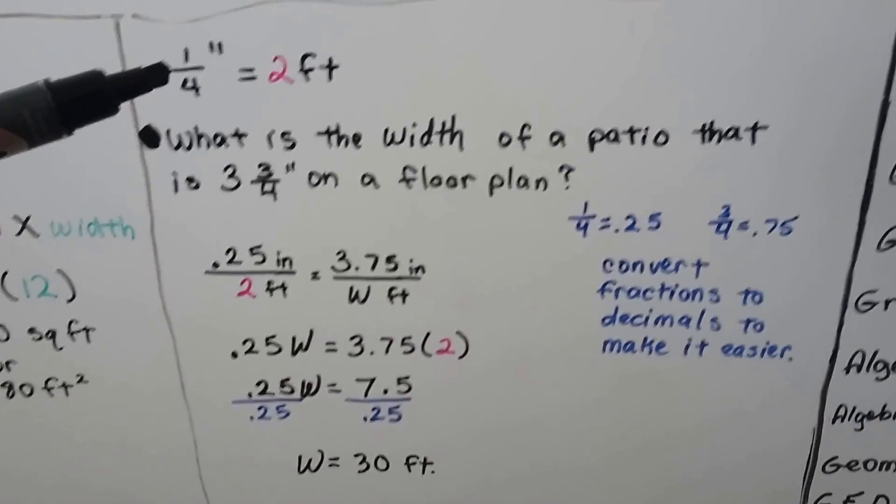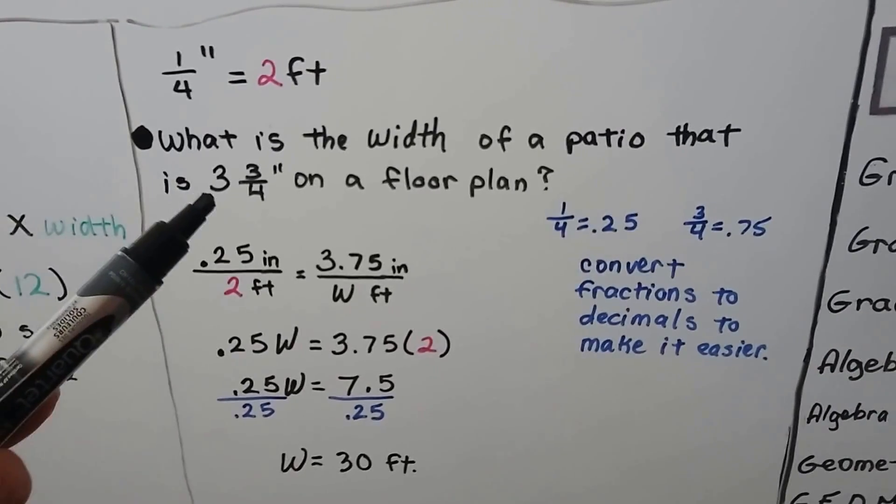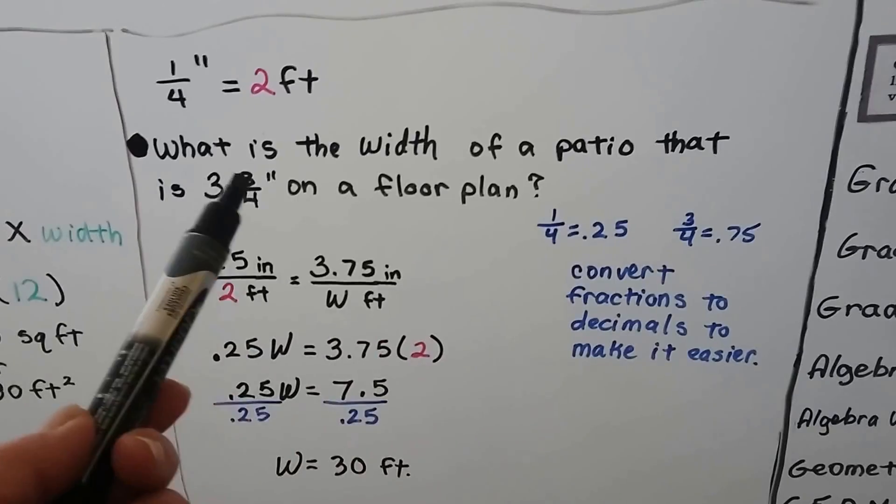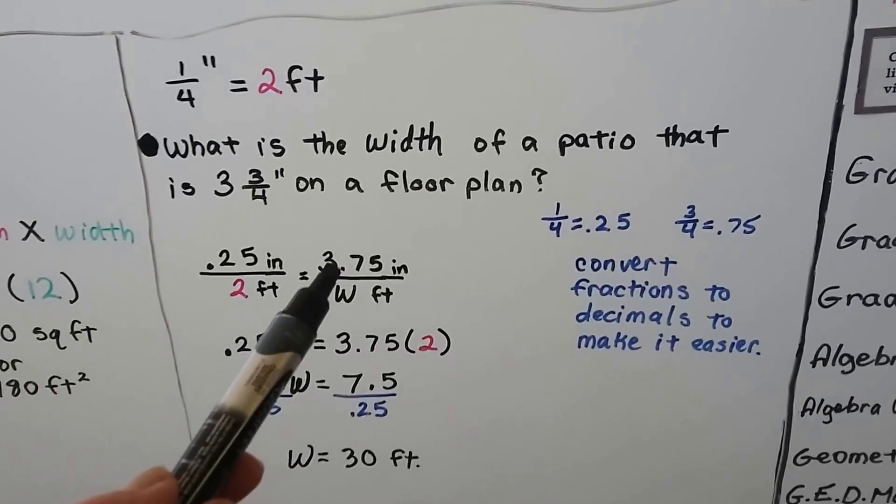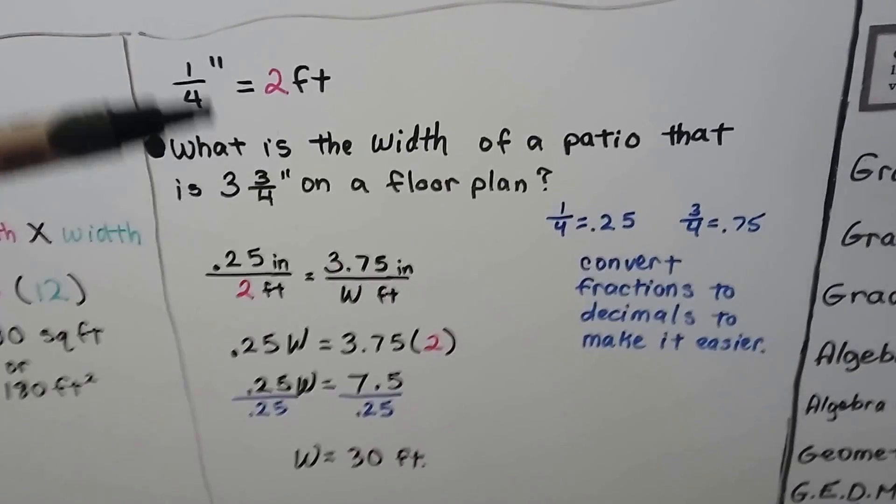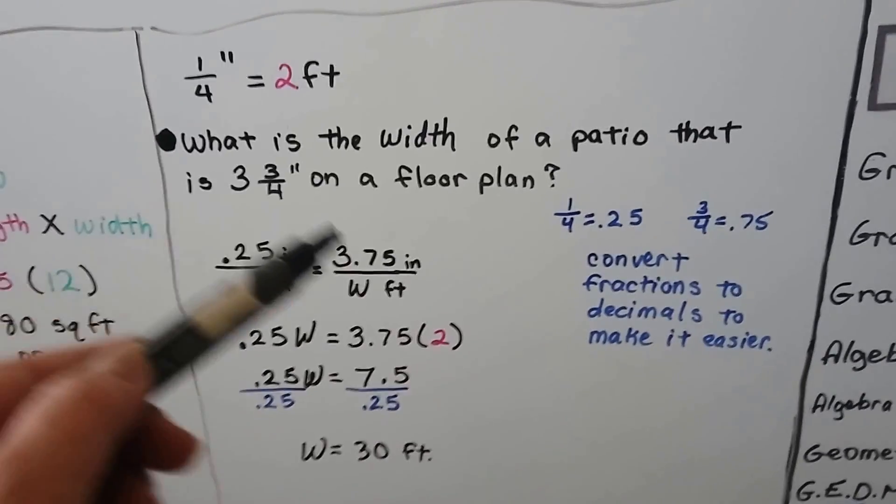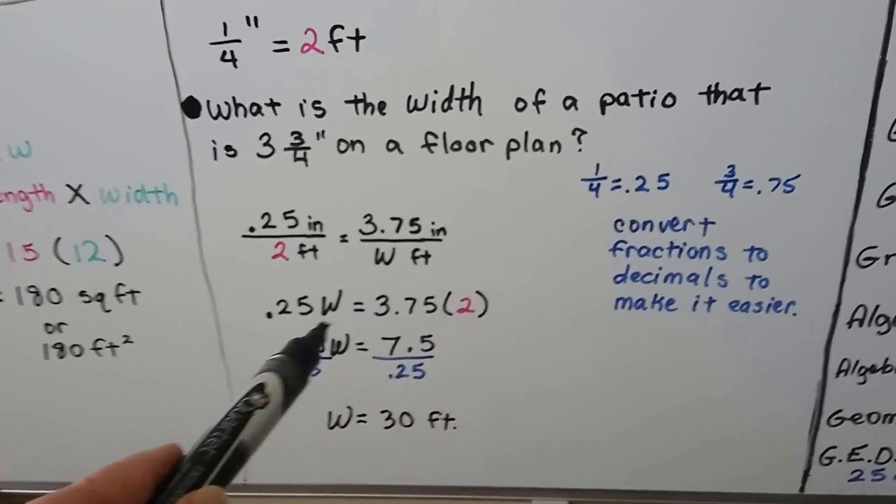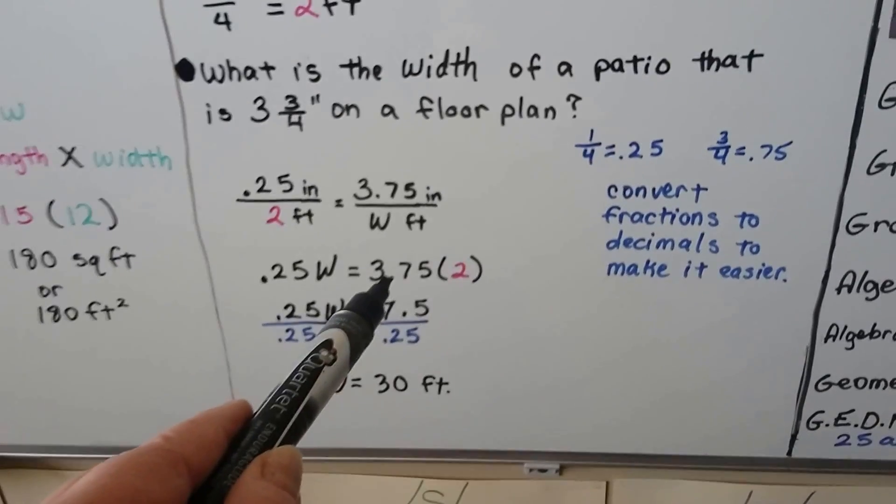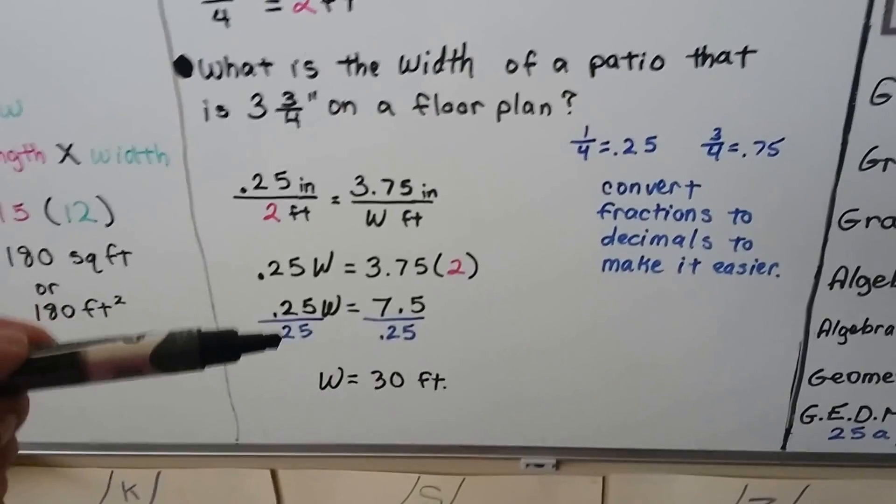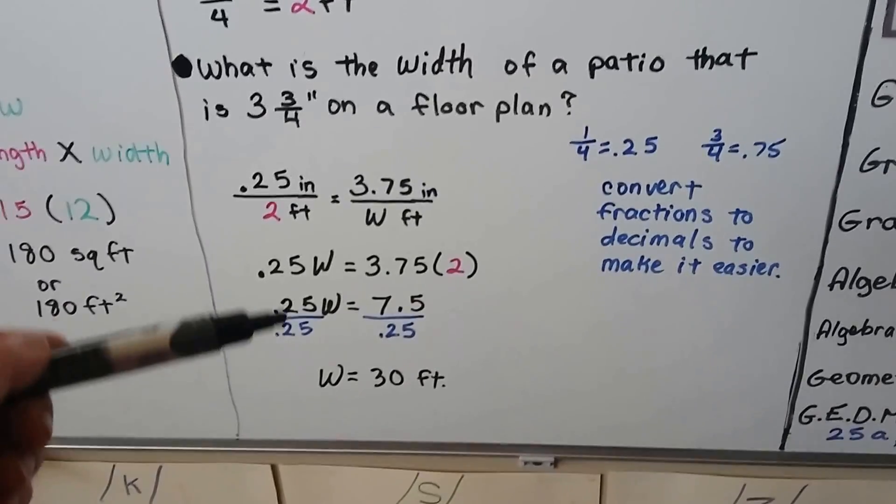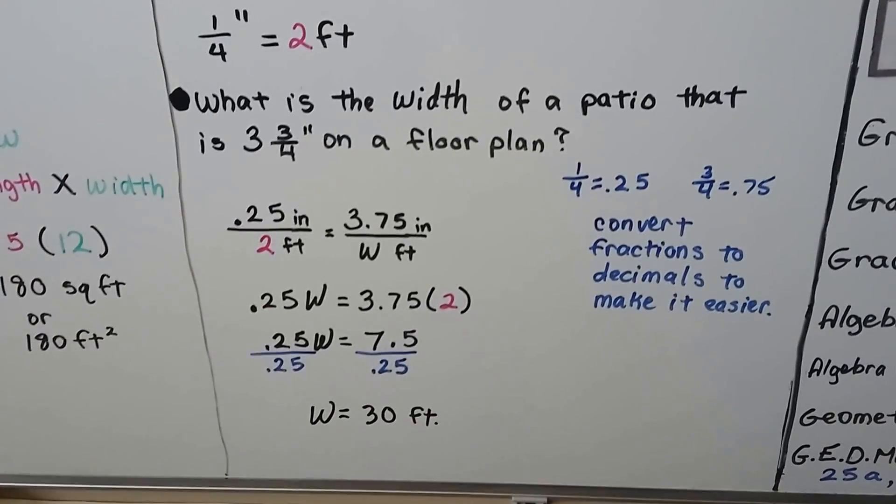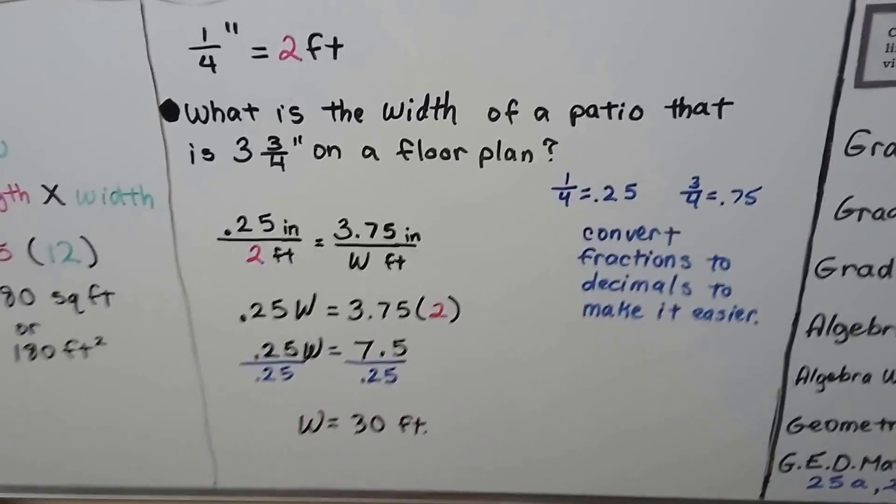For this one, a floor plan had one-quarter inch equals two feet. What is the width of a patio that is three and three-fourths inches on the floor plan? We want to write our fraction, but we already have a fraction here. So, we can turn that into a decimal of point two five. And, three-fourths is point seven five, so we know three and three-fourths is three point seven five. So, now we've got point two five over two. And, it's going to equal the measure from the ruler on our floor plan, three point seven five inches. And, that's going to equal the width. That's going to be over the width. We cross multiply. We get point two five times W equals three point seven five times two. Three point seven five times two is seven point five. Now, we can divide both sides of this equal sign by this point two five coefficient. We get a one, same numerator and denominator. We have one W, and when we do this division, we get thirty feet. So, we know the deck, the patio, is thirty feet wide. So, keep in mind that you can convert fractions to decimals to make it easier.